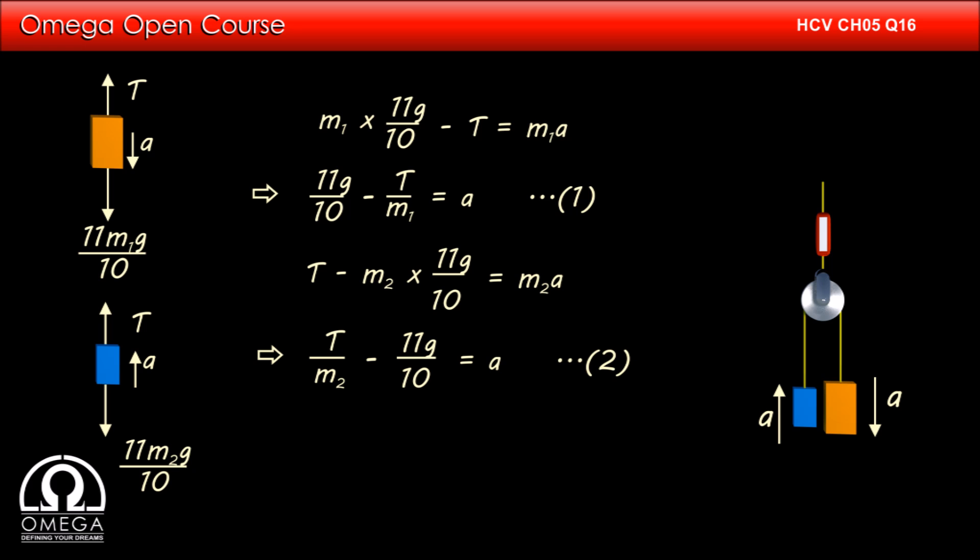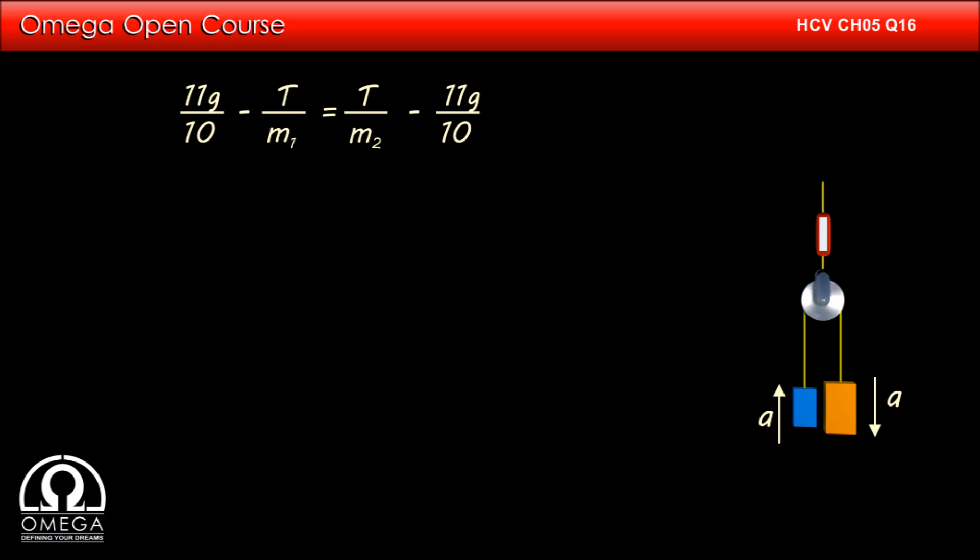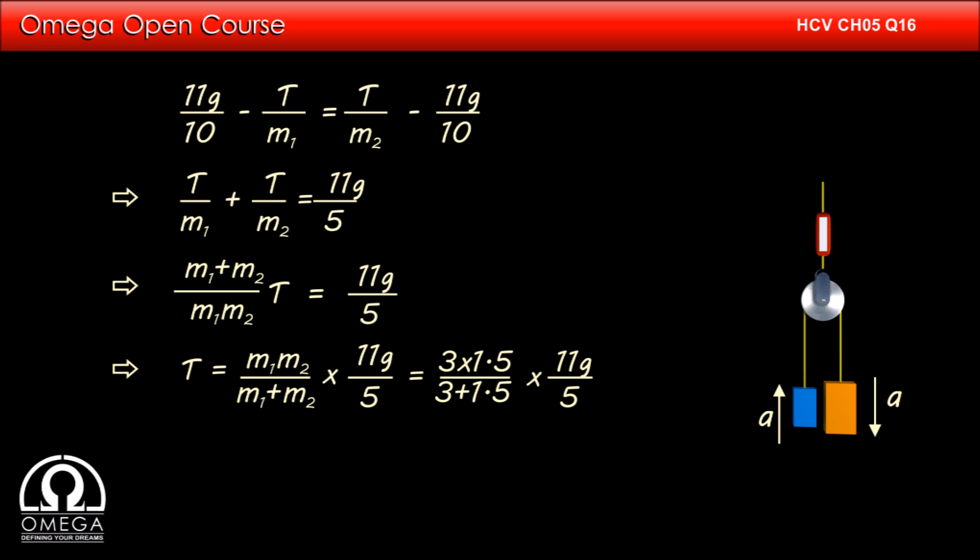Eliminating A from equation 1 and 2, we get 11g by 10 minus T by M1 equals T by M2 minus 11g by 10. Which implies T by M1 plus T by M2 equals 11g by 5, or M1 plus M2 divided by M1M2 into T equals 11g by 5. Which implies T equals M1M2 divided by M1 plus M2 into 11g by 5. Putting the values of M1 and M2, we get T equals 3 into 1.5 divided by 3 plus 1.5 into 11g by 5. Simplifying we get T equals 11g by 5.